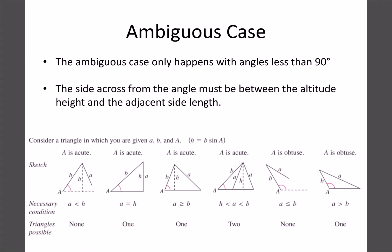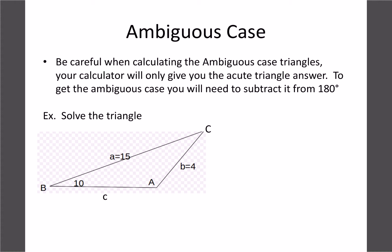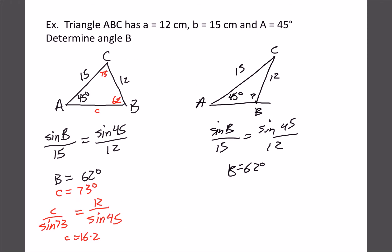A couple of things to remember: the ambiguous case only happens when you have an angle less than 90 degrees. The trick is that when calculating the ambiguous case, your calculator is always going to give you the smaller of the two angles. So when we solve for angle B in the second triangle, it gives us the small angle, not the bigger one we want. The trick is we need to subtract from 180. Going back to the first question: that 62 is actually the smaller angle, and since those two sides are equal we have an isosceles triangle, making the bottom angle 62 as well.